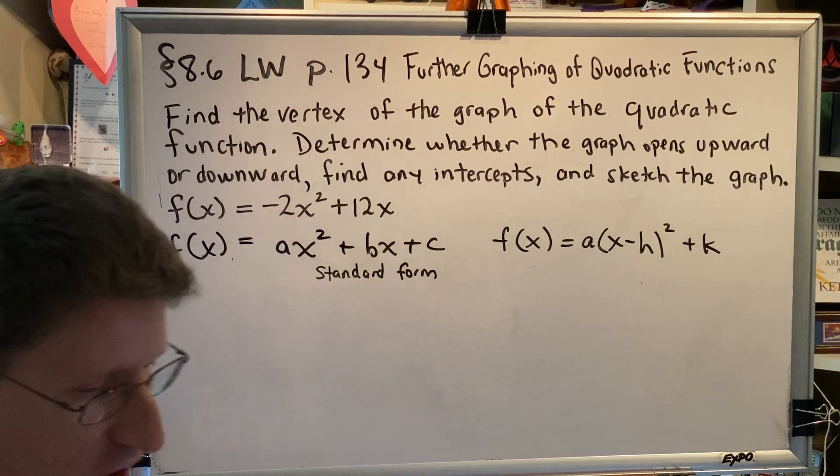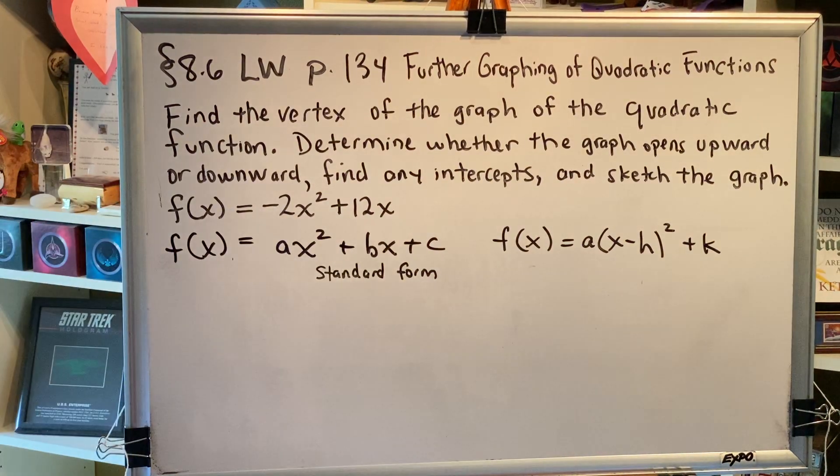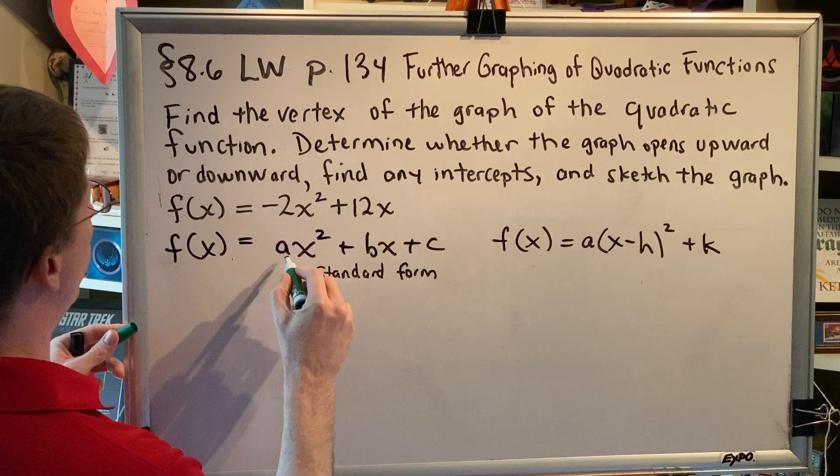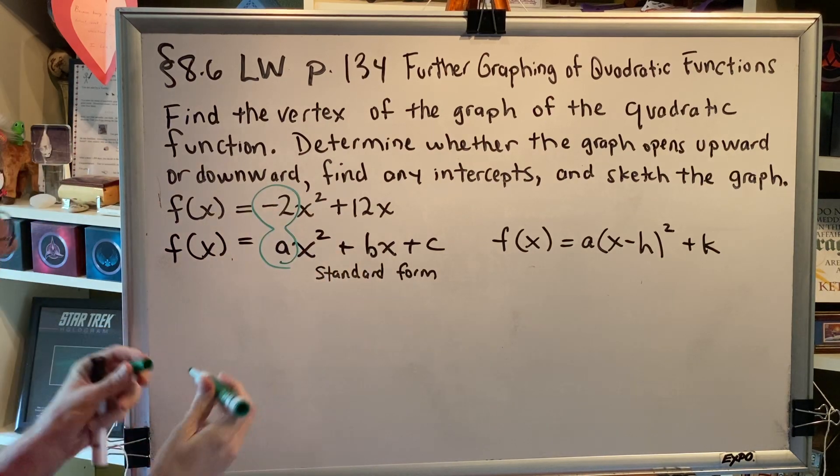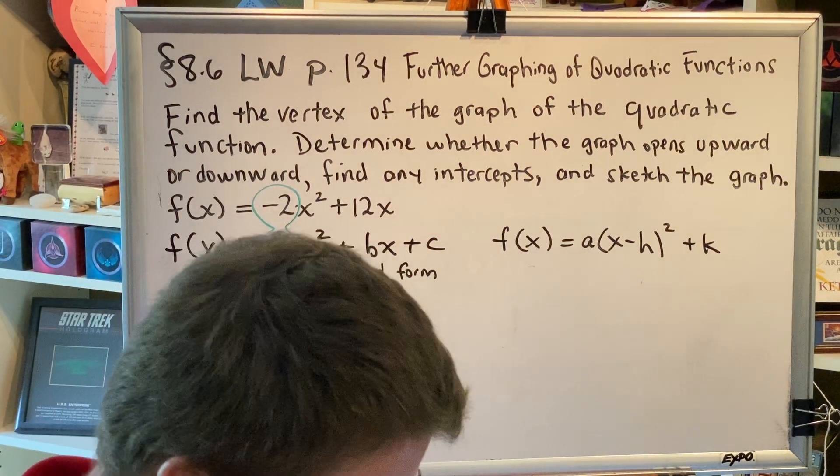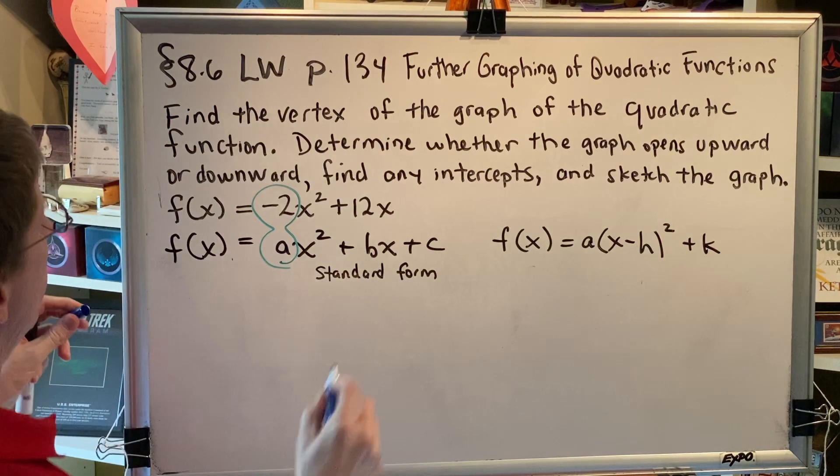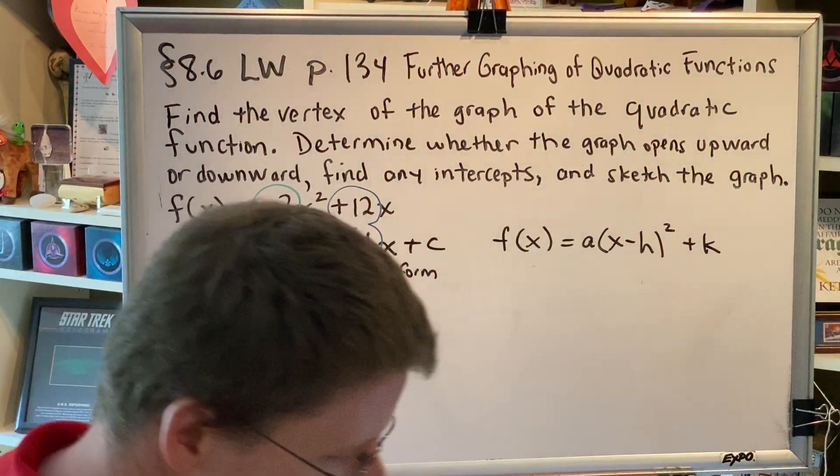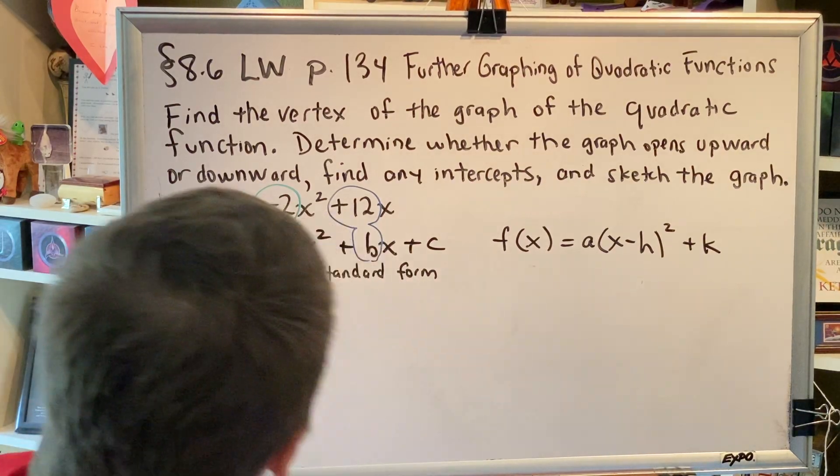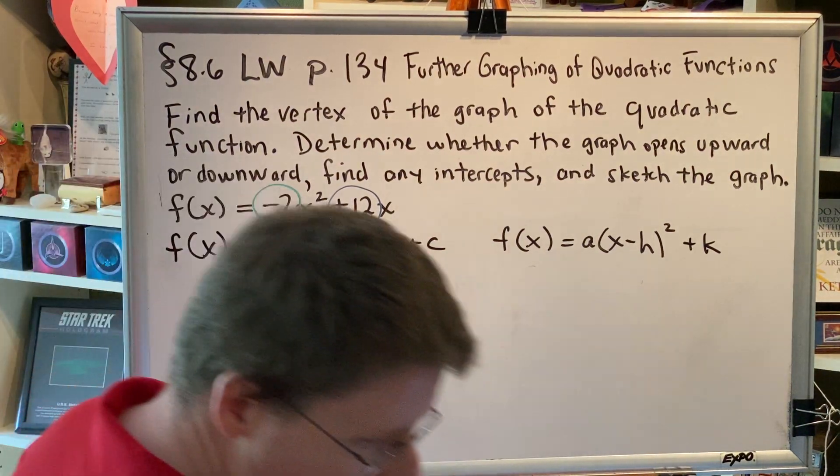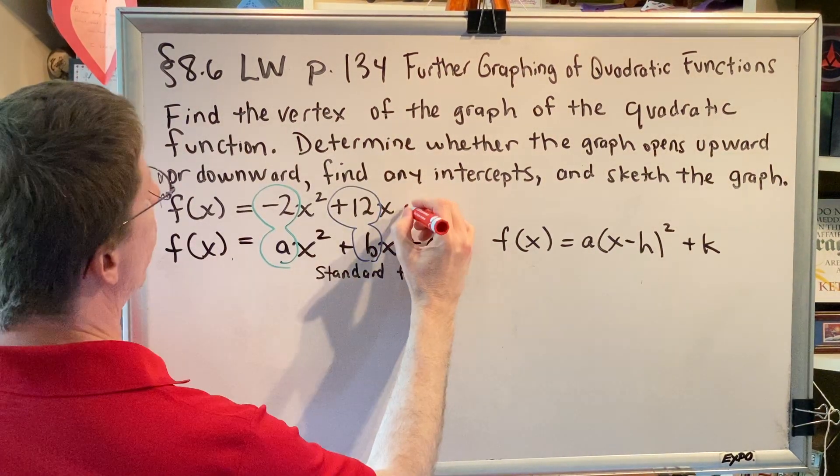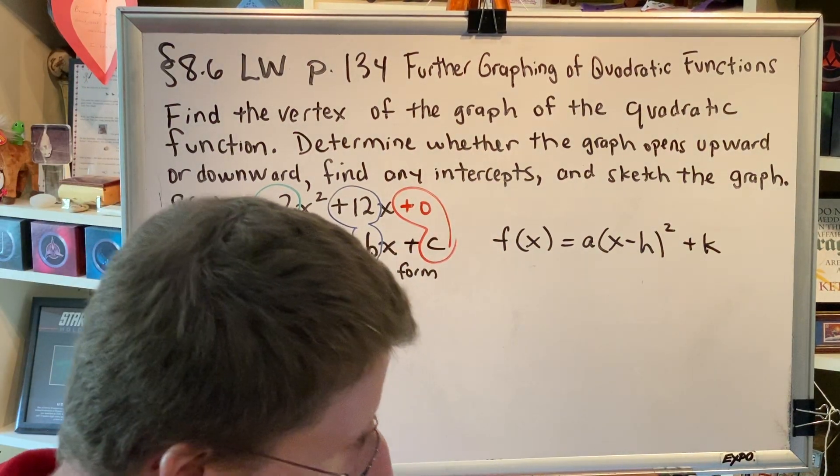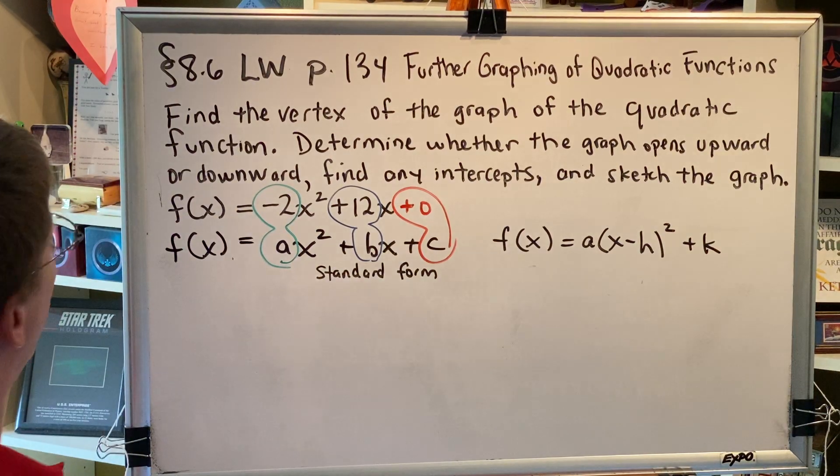Therefore, the method that we need to use in order to graph this is to use our formula to find the vertex. The first thing we notice here is that a is equal to negative 2. And the second thing we notice is that b is equal to positive 12. C is absent. That term is actually zero. We need to know a, b, and c to plug into our formula.